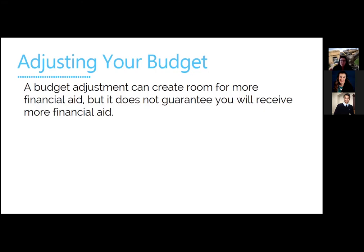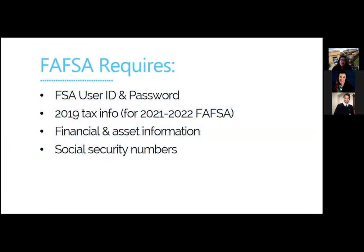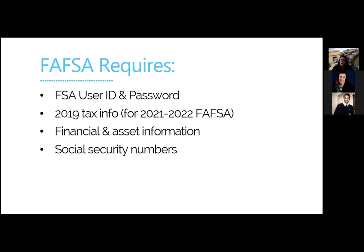The very first thing when we talk about financial aid is we always want to start with the FAFSA. The FAFSA is the document where you put in certain tax information and financial asset information, and that determines what aid a student is eligible for. When you're looking at starting a graduate program, whatever fall you'd be starting in, you always want to use two years prior on the FAFSA — we call that prior-prior year. So if you're starting graduate school in fall 2021, the FAFSA will ask you to use 2019 tax information.